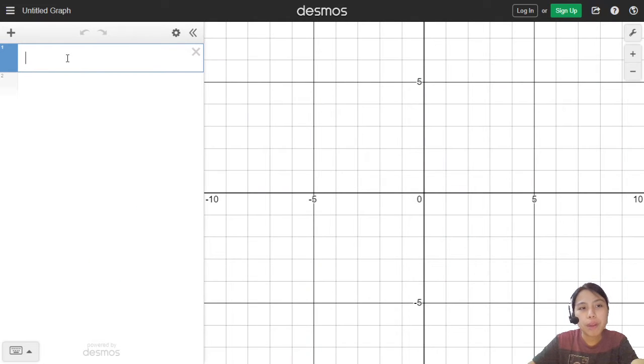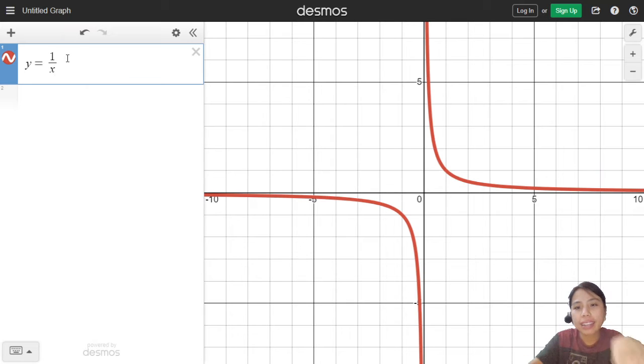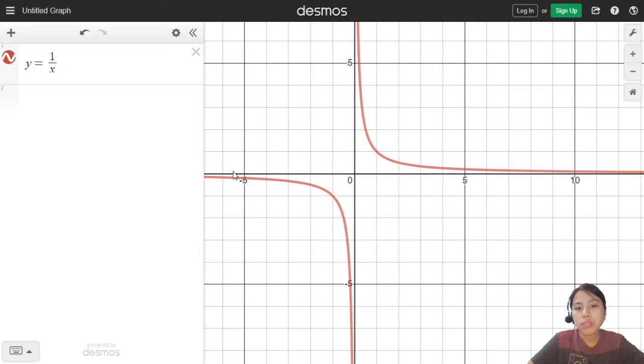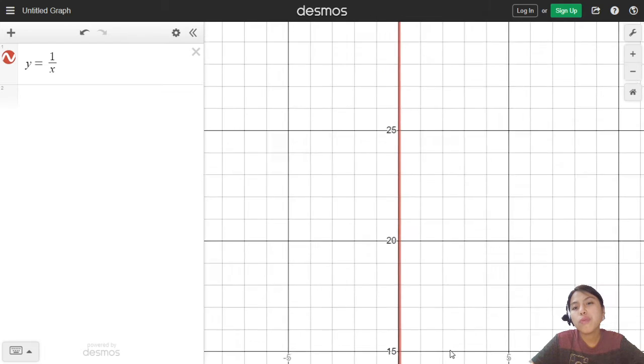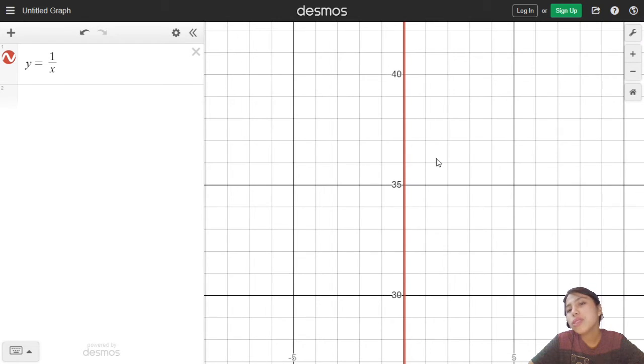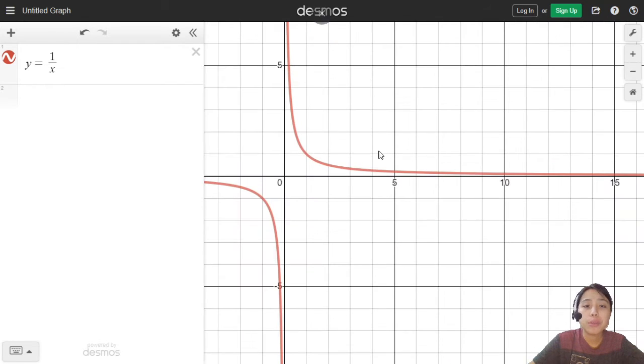So this is Desmos, where you can plot all kinds of graphs, but let's start off with the reciprocal. Y equals to 1 over x. There. So shapes generally like this, they are what we call asymptotes. Horizontal here and vertically. Means the graph will never touch it, although it's very close and pretty much almost on it. But those are what we call asymptotes.